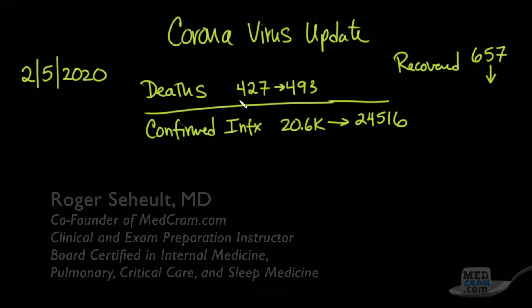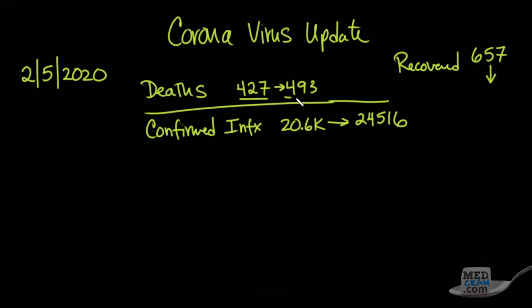The deaths have gone from 427 to 493, an increase of about 15%. That's a little bit less than it's been in the last couple of days. Normally, it's been running in the 18 to 20%. Confirmed infections has gone to 24,516. That's up around 19%. And then we've got recovered.